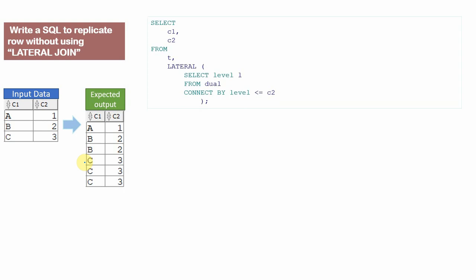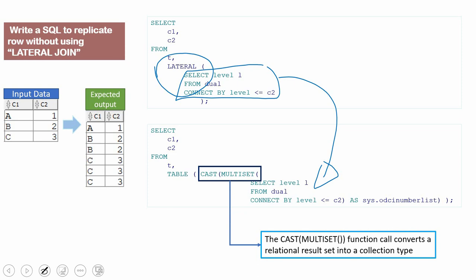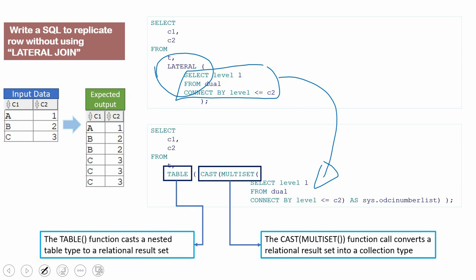Let me show you how the query executes. The lateral join implementation works from Oracle 12 onwards but not in previous versions. The key learning here is that both queries work like a correlated subquery. CAST MULTISET converts the relational data into a collection type, and then the TABLE function keyword converts the collection data back into a relational result set, so it acts like a table that you can join with any other table as if it were a normal table. This is how we implement lateral functionality without using the lateral keyword.